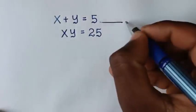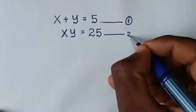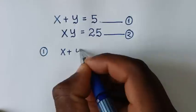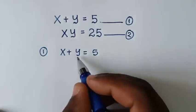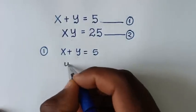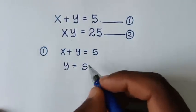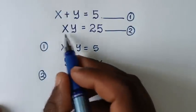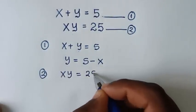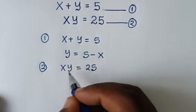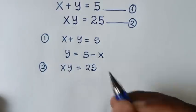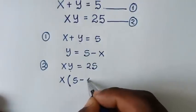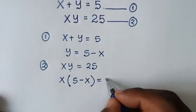Let's label this as equation 1 and this as equation 2. From equation 1, which is x plus y is equal to 5, we make y the subject: take x to the other side, so y is equal to 5 minus x. Then from equation 2, which is xy is equal to 25, we substitute y — so it will be x times bracket 5 minus x bracket is equal to 25.